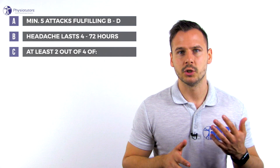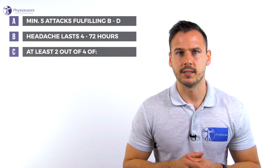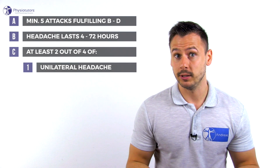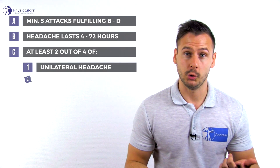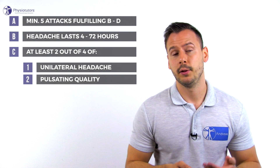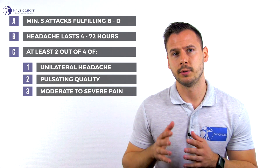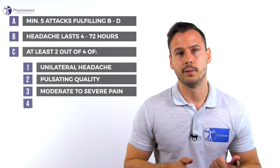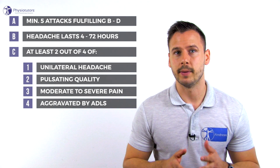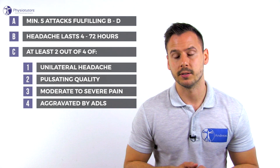Criterion C: the headache has at least two of the four following characteristics. One, it's a unilateral headache. Two, the headache has a pulsating quality. Three, it has a moderate to severe pain intensity. Four, the headache is aggravated by routine physical activity, such as climbing stairs.